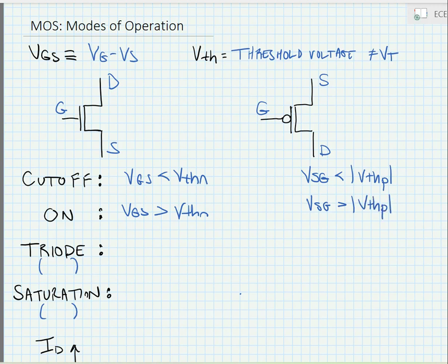Now, once the VGS is greater than the threshold voltage, the transistor is on, and we can check to see whether it is in triode or in saturation. For both triode and saturation, the base condition is the device has to be on. In other words, it has to be conducting current.